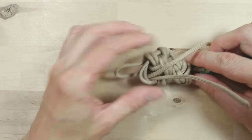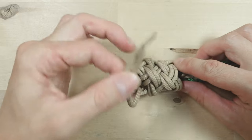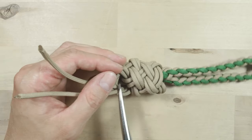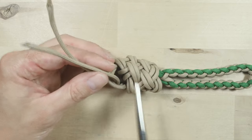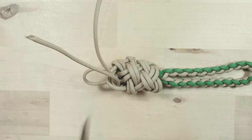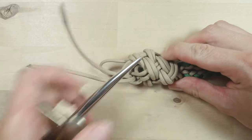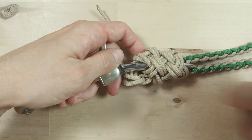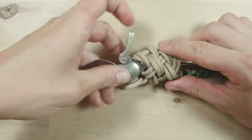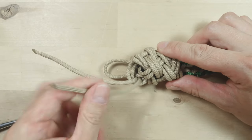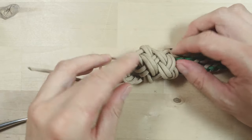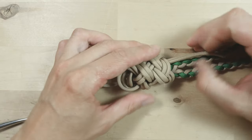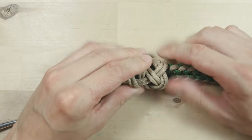Before we continue we're going to take our two ends and we're going to bring them under the knot to the right, just to hide them out of sight. I'm going to travel here, just behind the two standing ends and tuck my two working ends under the knot. Like this. So this is our knot.